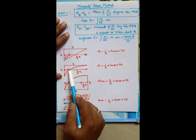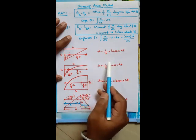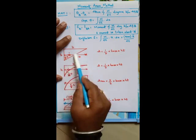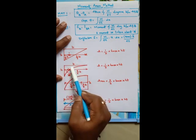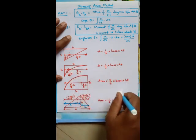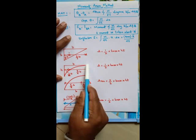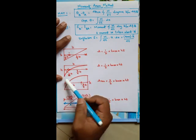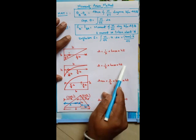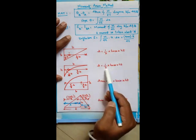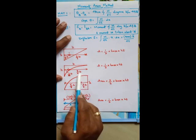For a cantilever beam subjected to UDL, the bending moment diagram is parabolic — a 'parabolic triangle.' The area is (1/3) × base × height. The CG is located at one-fourth of the base from the maximum end and three-fourths from the minimum end.